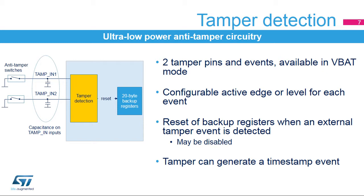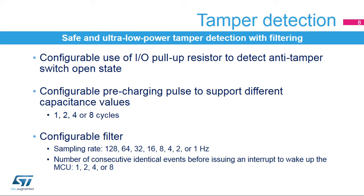Note that an external pull-up is required in edge detection mode. In level detection mode, the internal pull-up is used as explained in the next slides. The tamper detection circuit includes an ultra-low power digital filter. The internal I/O pull-up can be used to detect the anti-tamper switch state. The I/O pull-up is applied only during the pre-charging pulse in order to avoid any consumption if the tamper pin is at a low level. The pre-charging pulse duration is configurable to support different capacitance values and can be 1, 2, 4, or 8 TAMP clock cycles.